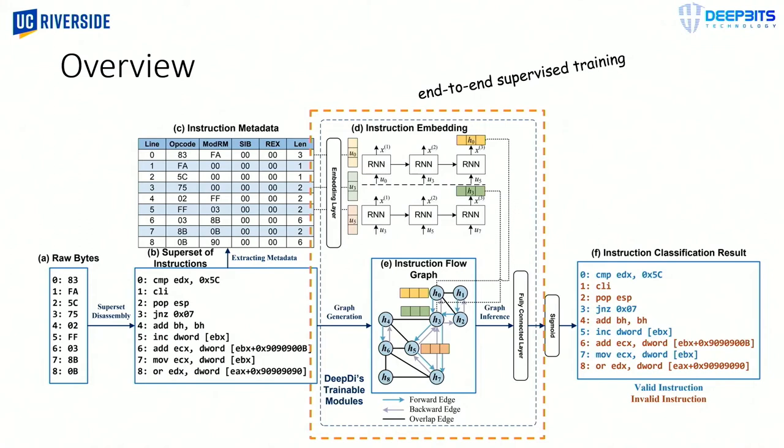So a quick recap. We use superset disassembly to decode and extract the information metadata as the input. The components in the orange box are trainable, and they will encode and propagate inputs on the graph. And the final output is the likelihood of each instruction being true instruction. And our model is trained via supervised training in an end-to-end fashion.